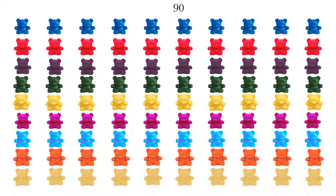There are 9 lines of 10 counting bears. 9 groups of 10 make 90. This is the number 90. I am glad you could count with me today. I hope you have fun continuing to practice counting to 90.